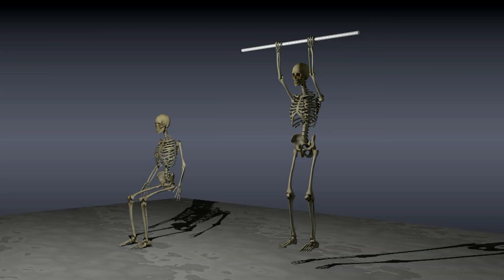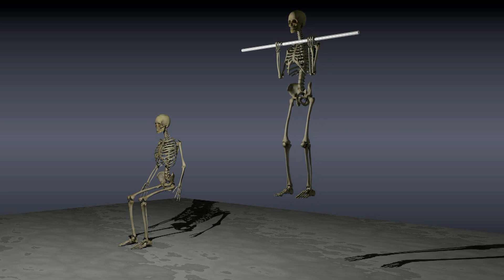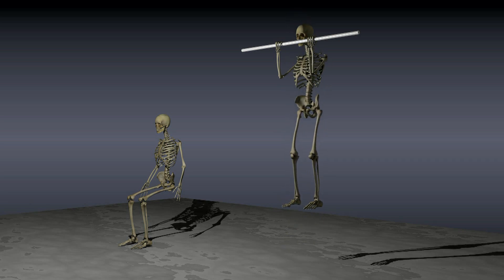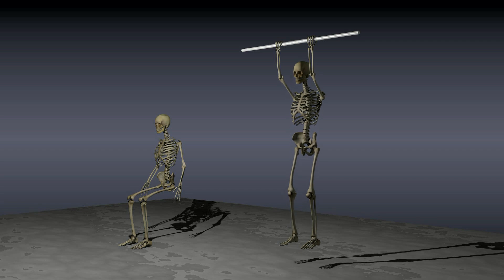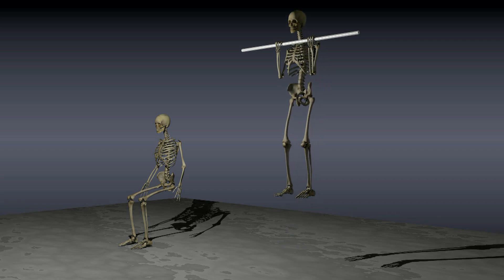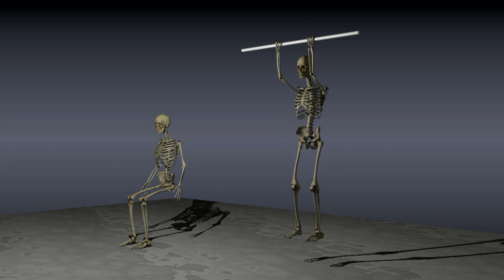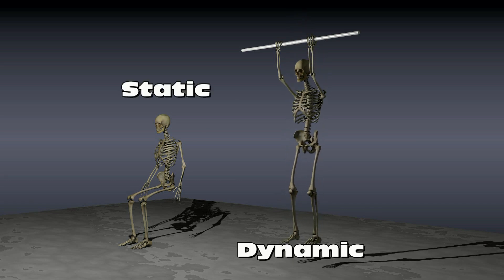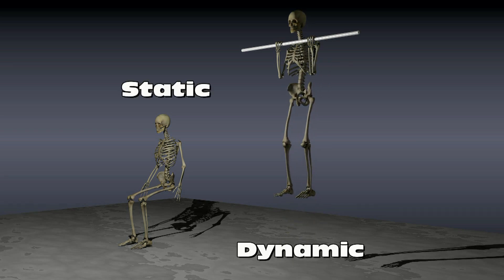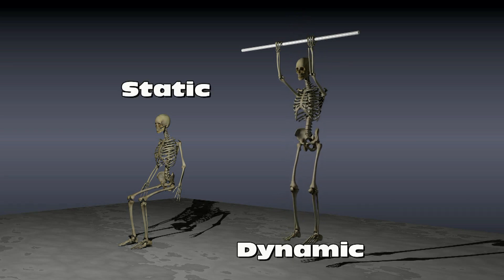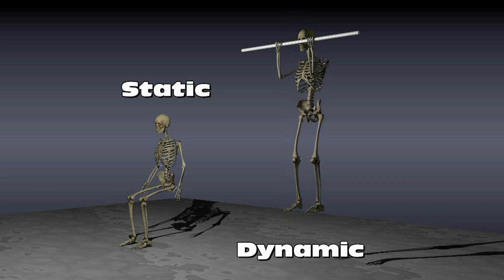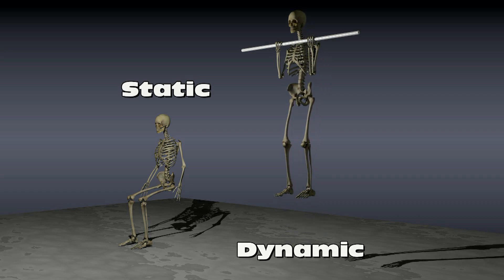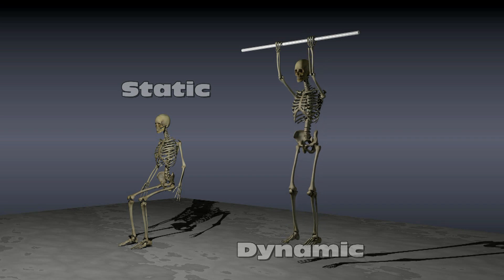Doing pull-ups requires isotonic contractions, while the invisible chair requires isometric contractions. The pull-ups are a dynamic exercise where there is movement, whereas the invisible chair is a static exercise where there is no movement.